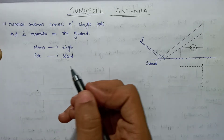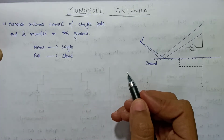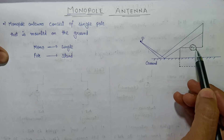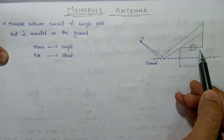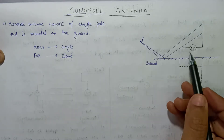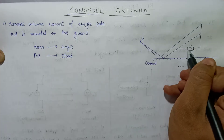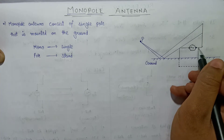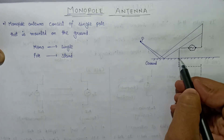Moving on, one end of the supply is connected to the monopole antenna and the other end is connected to the ground. Here is the supply being connected to one end of the antenna, and the other end is connected to the ground.